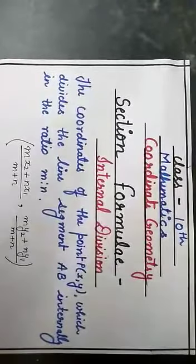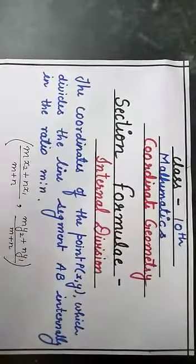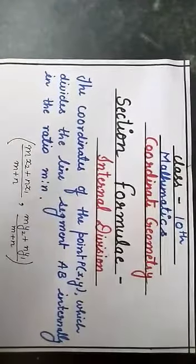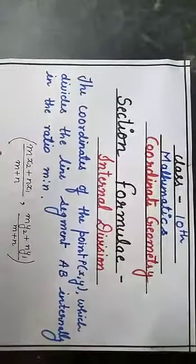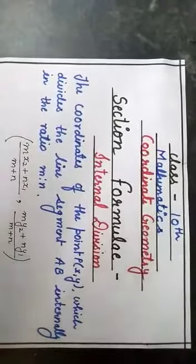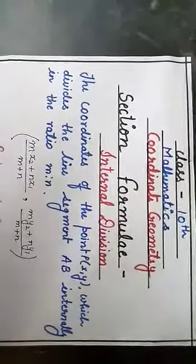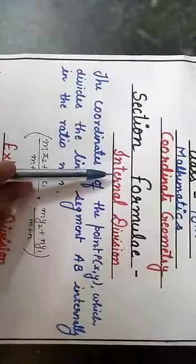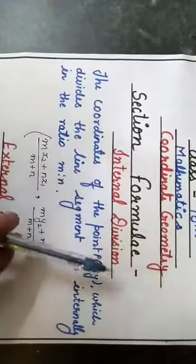In the section formula, we divide the line segment AB into two parts. The point which divides the line segment AB is called P(x, y). First, we have internal division.